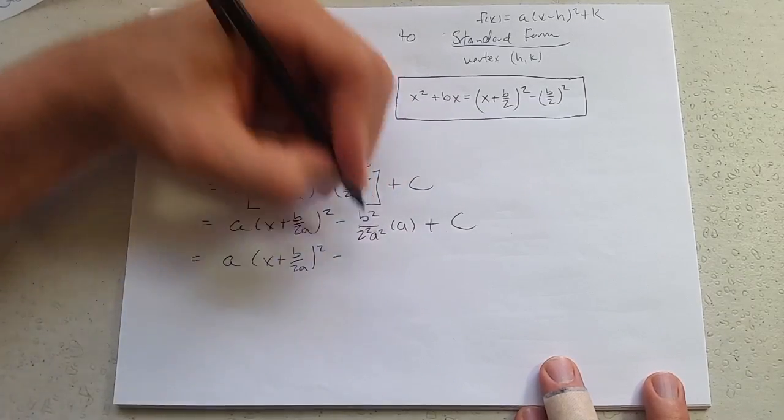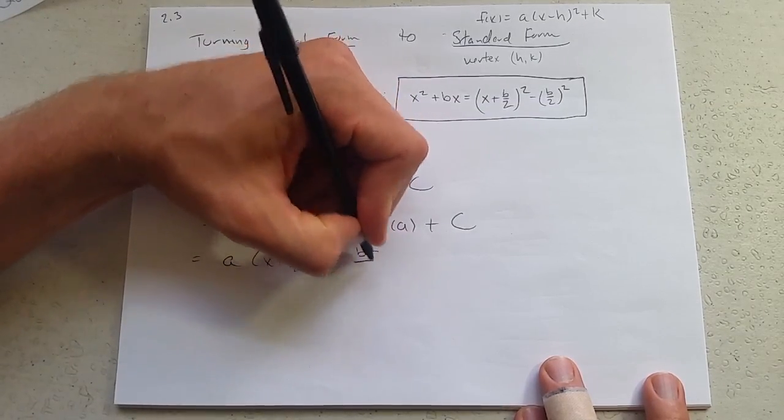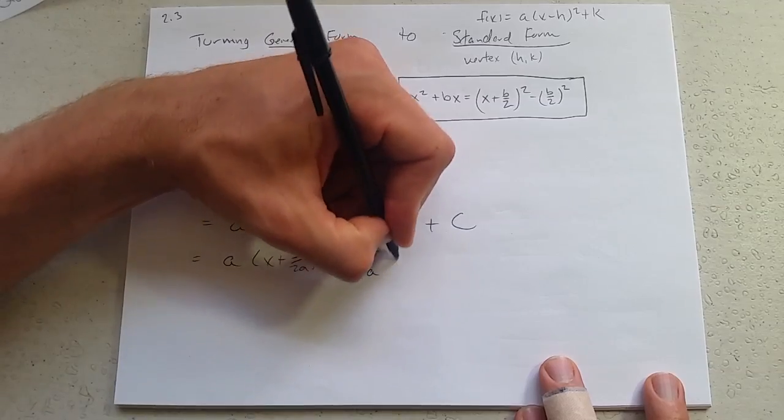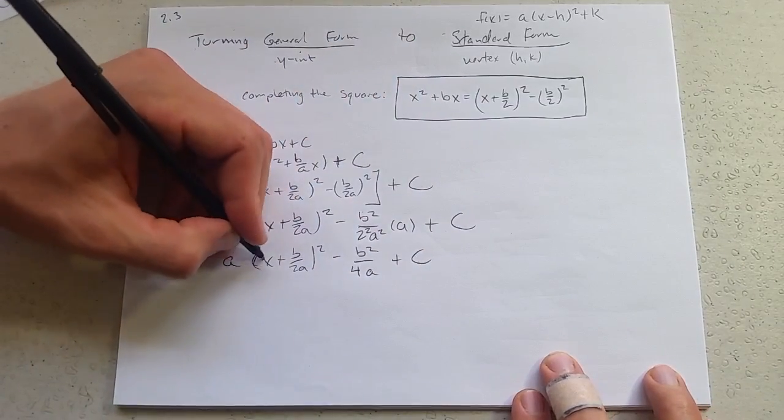A cancels one of these a squared. We have b squared over 4a plus c. Alright.